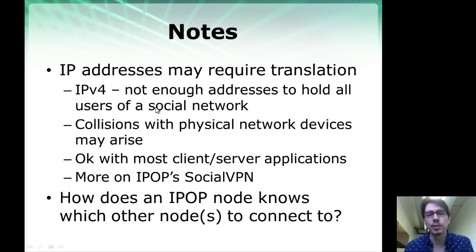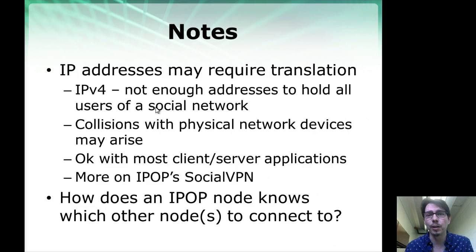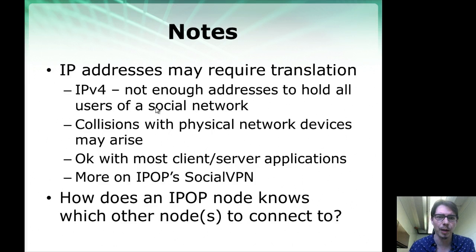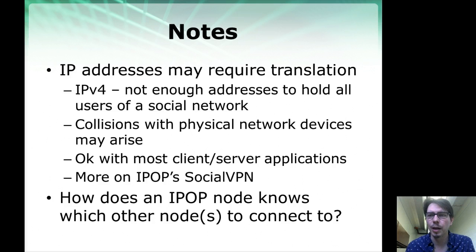IP addresses may require translation. As mentioned, IPv4 is running out of IP addresses. If you wanted to give an IPv4 address to every user on Facebook, for example, you would not be able to map all those addresses into the private address space described earlier. IPOP allows us to map IP addresses to sidestep some of these limitations, and this will be described further when we get into SocialVPN, which is one of the VPNs built on top of IPOP.